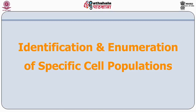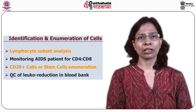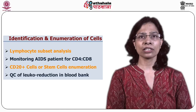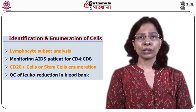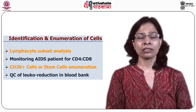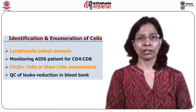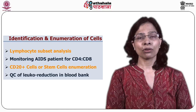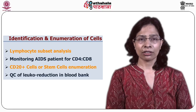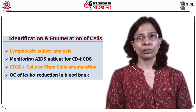The first set of applications involves the identification and enumeration of specific cell populations. Under this heading, we will discuss lymphocyte subset analysis, which is useful in monitoring AIDS patients. We will also look at subset analysis of B lymphocytes, namely CD20 positive cells, to monitor monoclonal antibody therapy, enumeration of stem cells useful in autologous stem cell transplantation, and quality control of leukoreduction in blood banks.